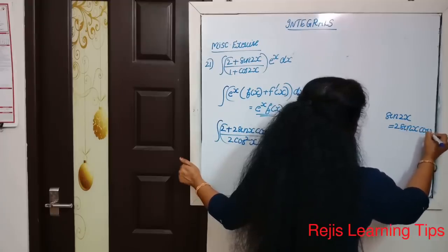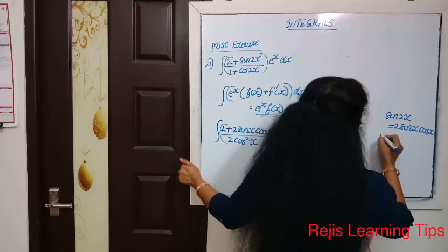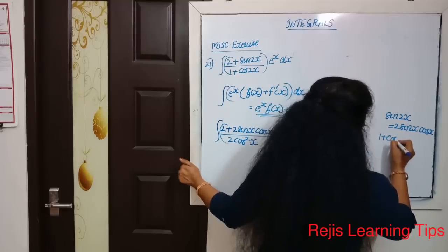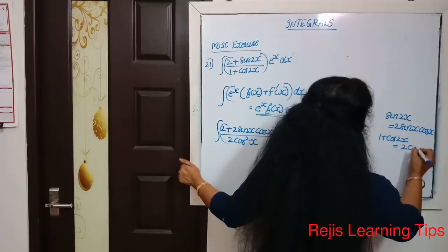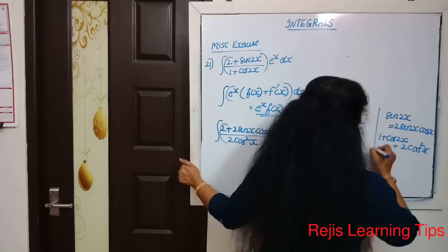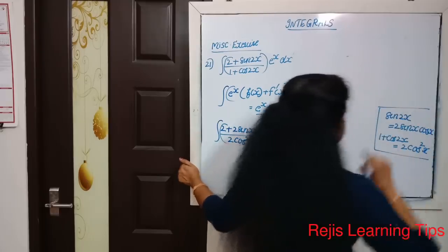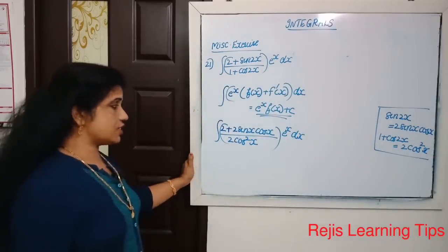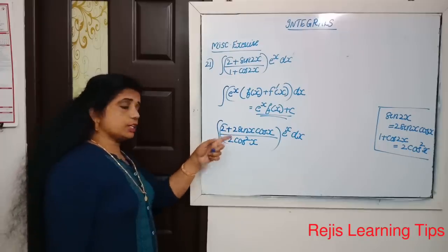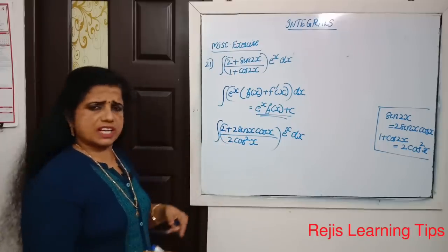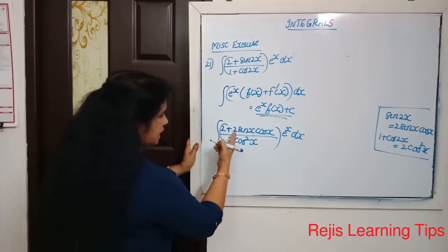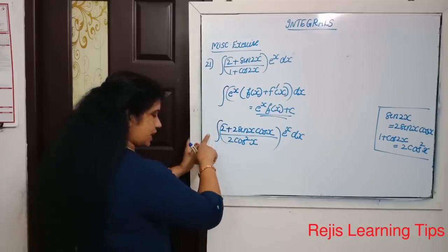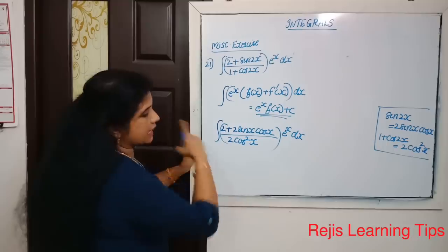Now we use the identity: 1 + cos2x equals 2cos²x. With these substitutions in place, we see that the 2 in the numerator and the 2 from the denominator can cancel.